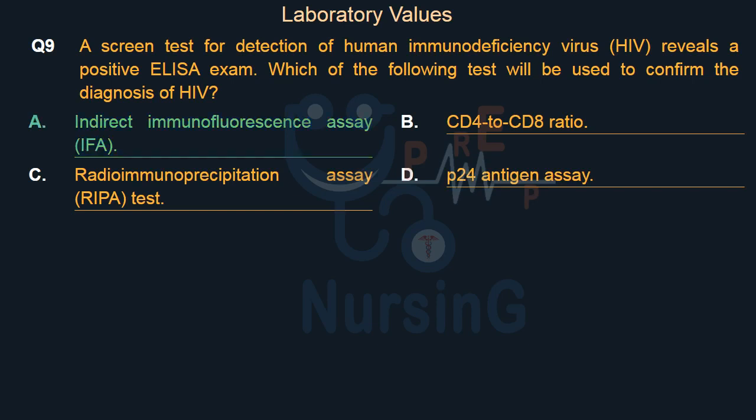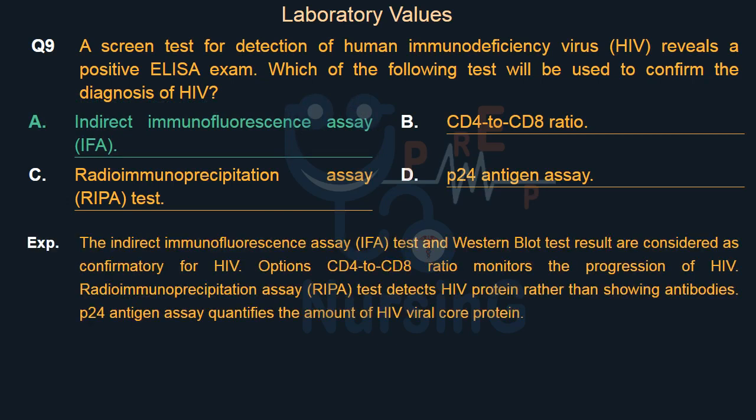The right answer is Option A: Indirect immunofluorescence assay (IFA). The IFA test and western blot test results are considered confirmatory for HIV. The CD4 to CD8 ratio monitors the progression of HIV. The RIPA test detects HIV protein rather than showing antibodies. The P24 antigen assay quantifies the amount of HIV viral core protein.